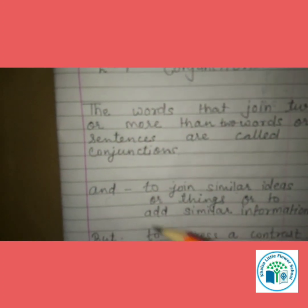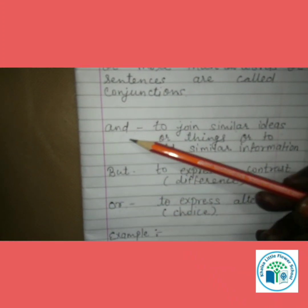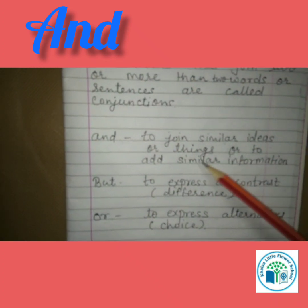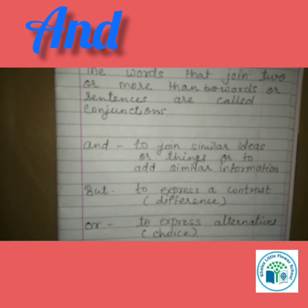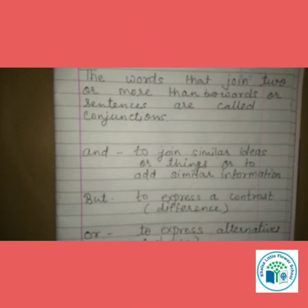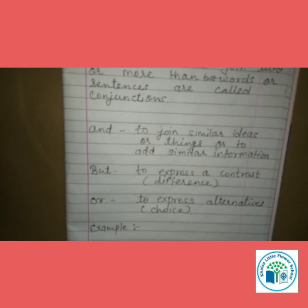Today we will learn three Conjunctions: 'and', 'but', and 'or'. 'And' is used to join similar ideas or things, or to add similar information. For example, Rhea is an intelligent girl and Rhea is a hard-working girl. So we can say: Rhea is an intelligent and hard-working girl.